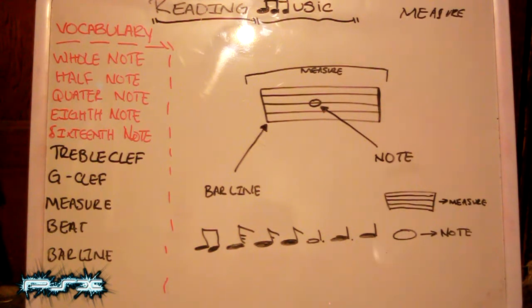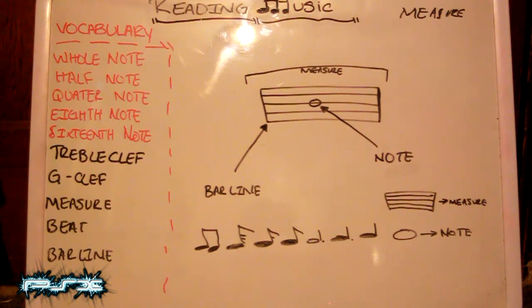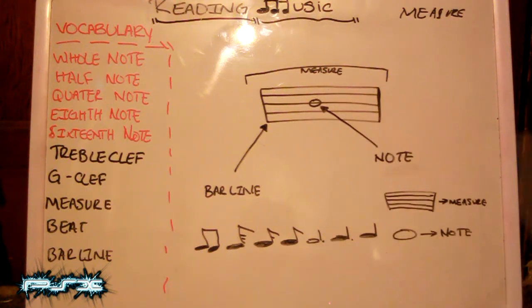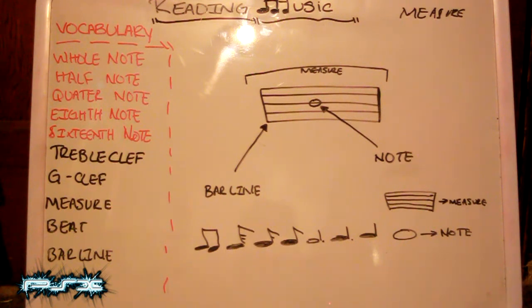Now here we have the measure. The measure is pretty much the grid on music. Basically it holds your notes, but that's not its only job — it pretty much is the grid. Think about graph paper, but actually this measure, this type of grid, is a little bit different than many other types of grids.